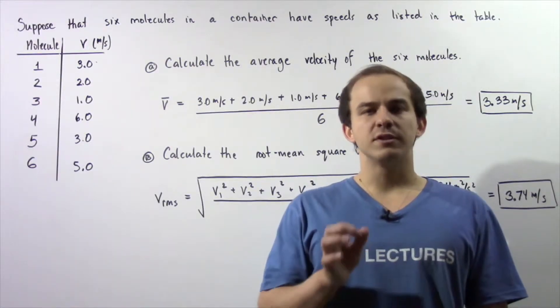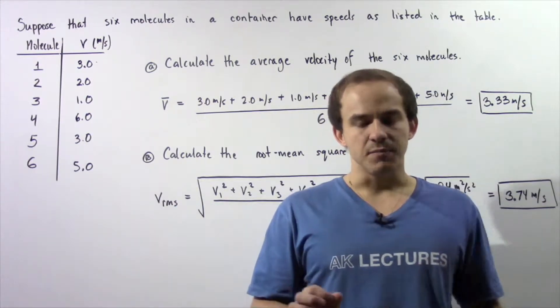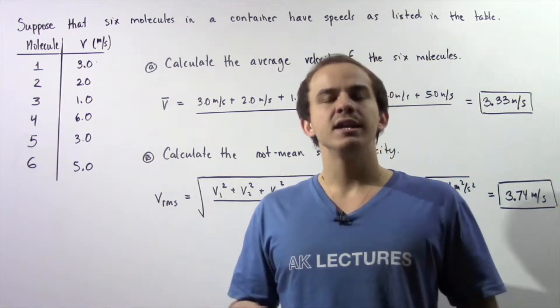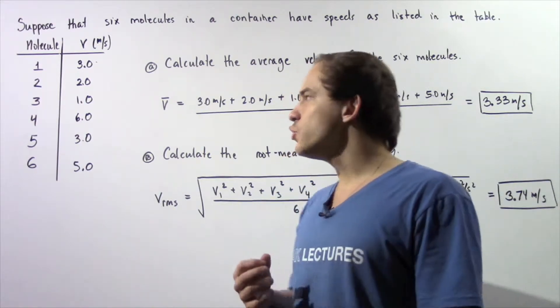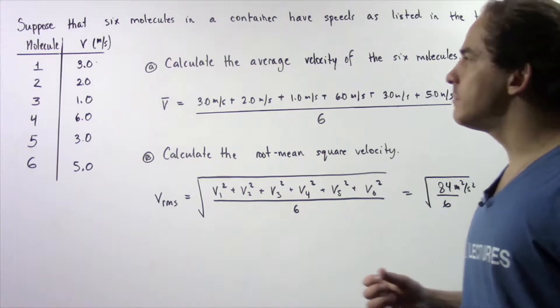Recall that the root mean square velocity is not the same thing as average velocity. Although sometimes the two values will coincide, most of the time the two values are different as we'll see in the following example.